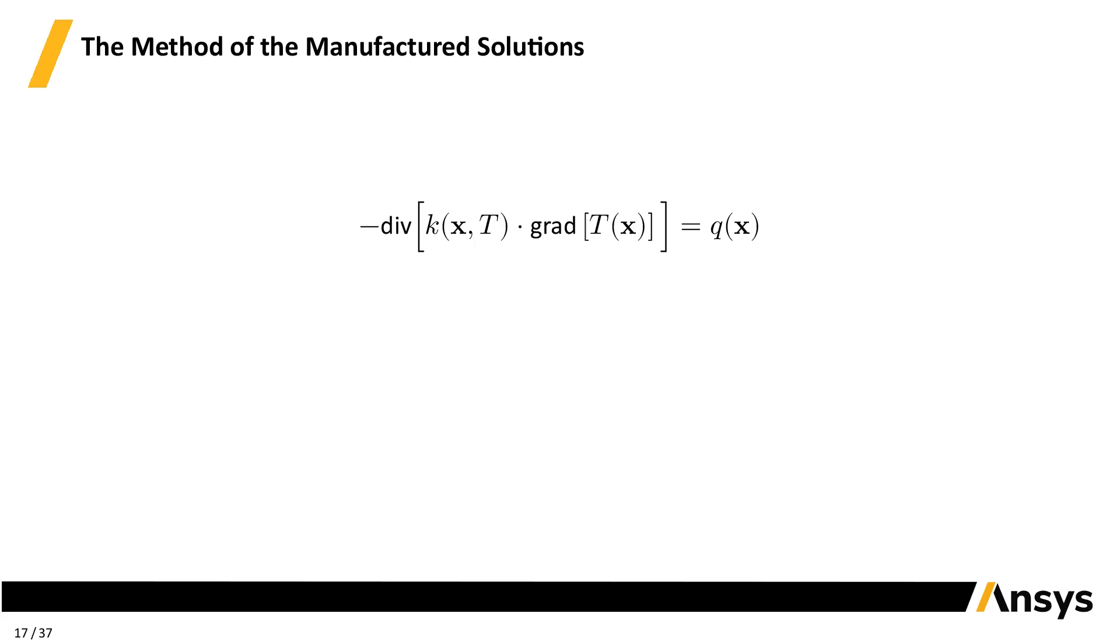Enters the method of manufactured solutions, aka MMS, to the rescue. Let's continue sticking to steady-state heat conduction. Given a certain source and boundary conditions, our code's job is to find the temperature distribution. Mathematically, this implies somehow integrating the source Q twice, which is hard. But hey, that's why we have a job in the first place.